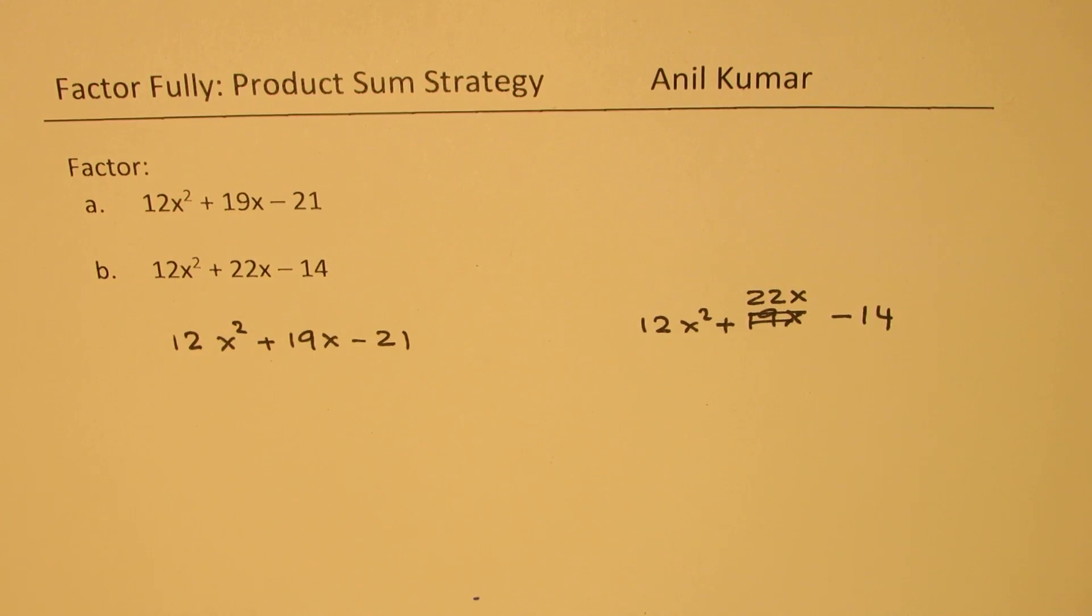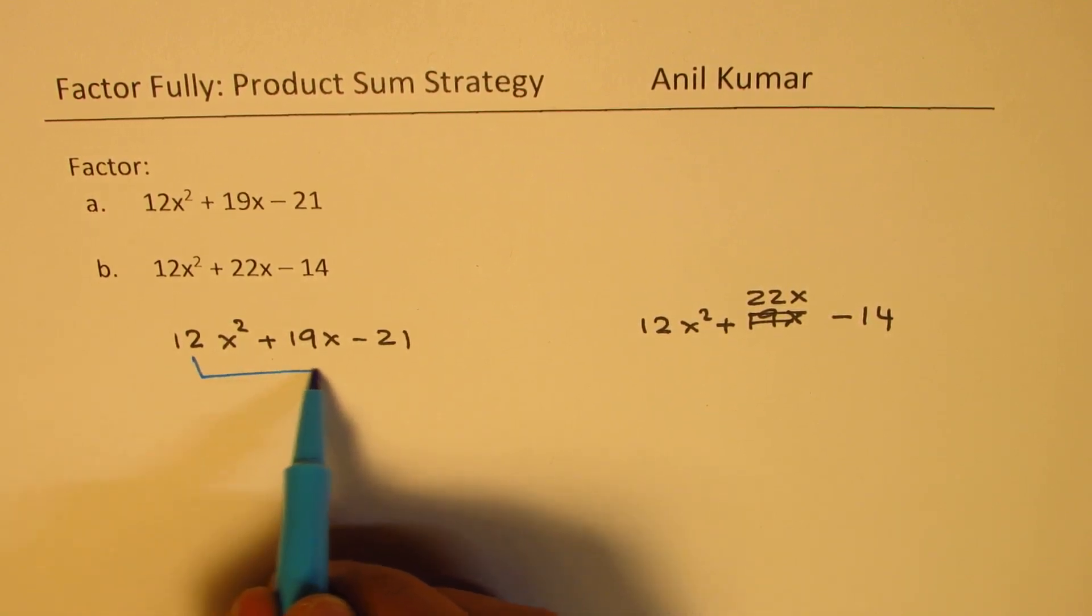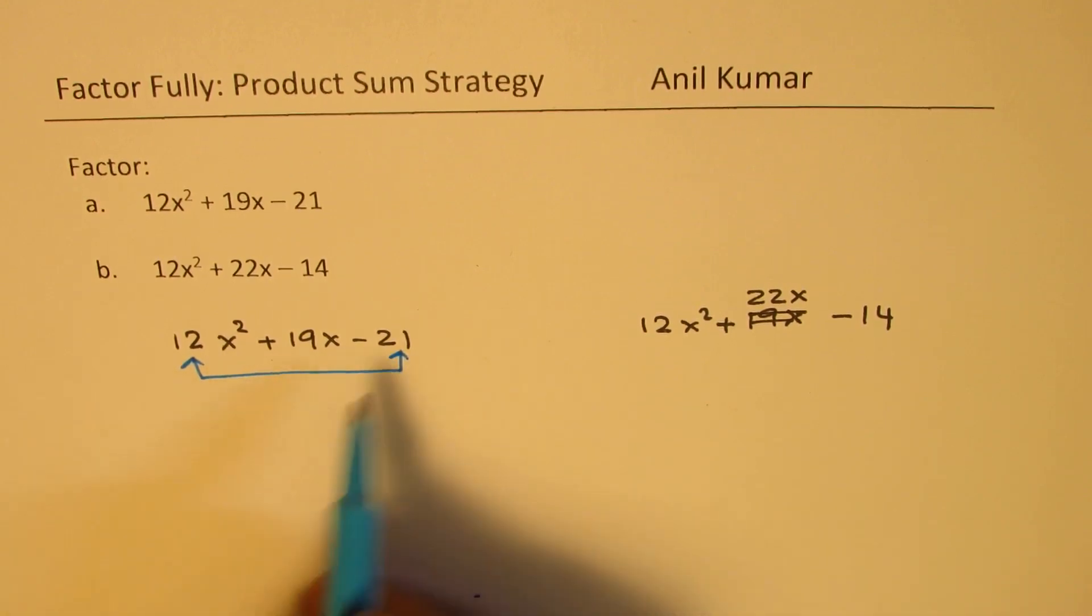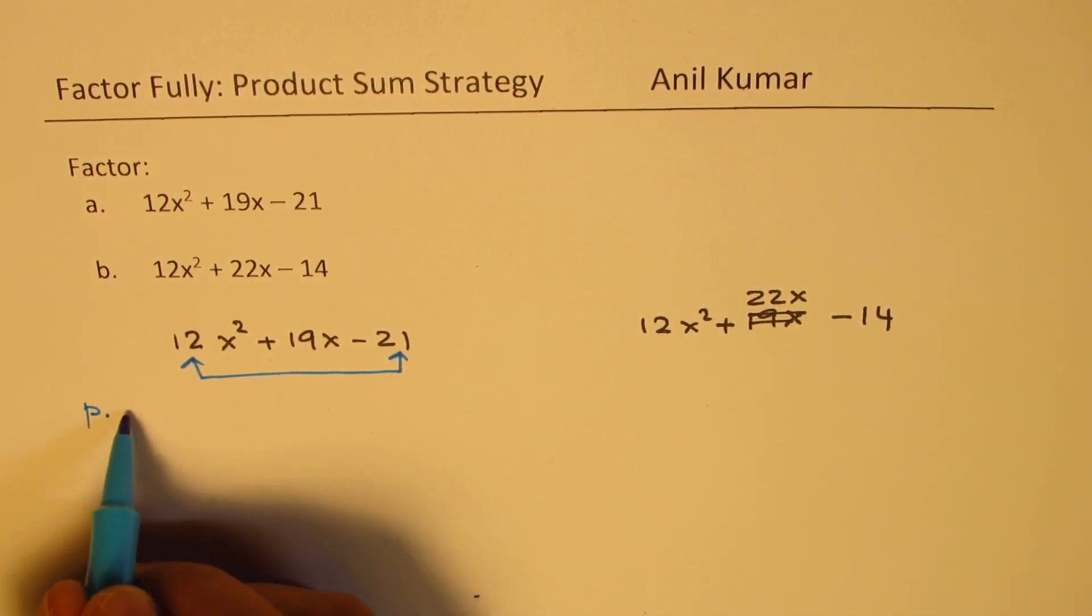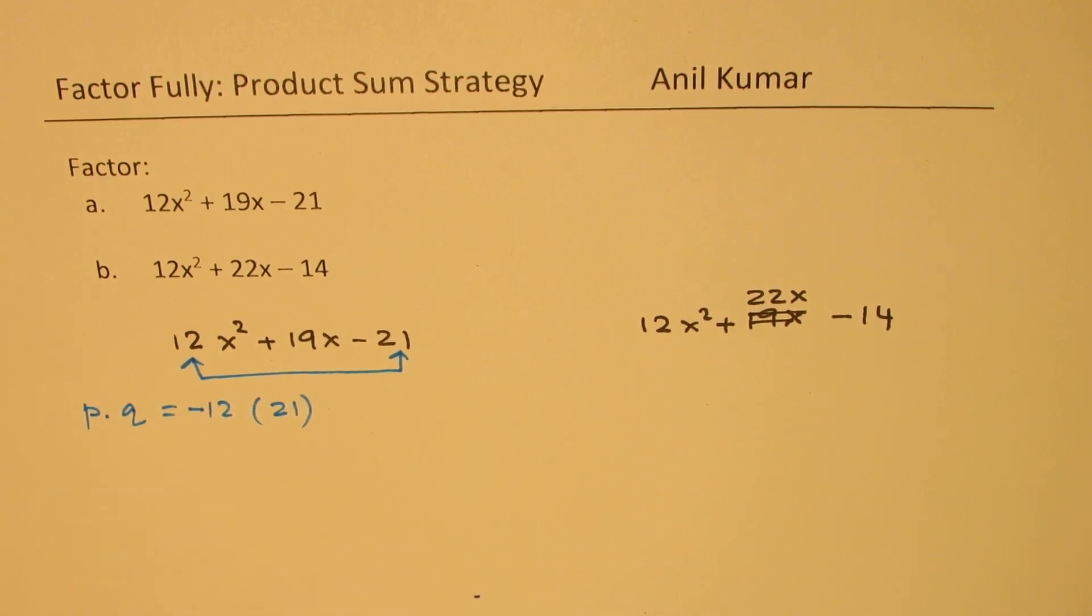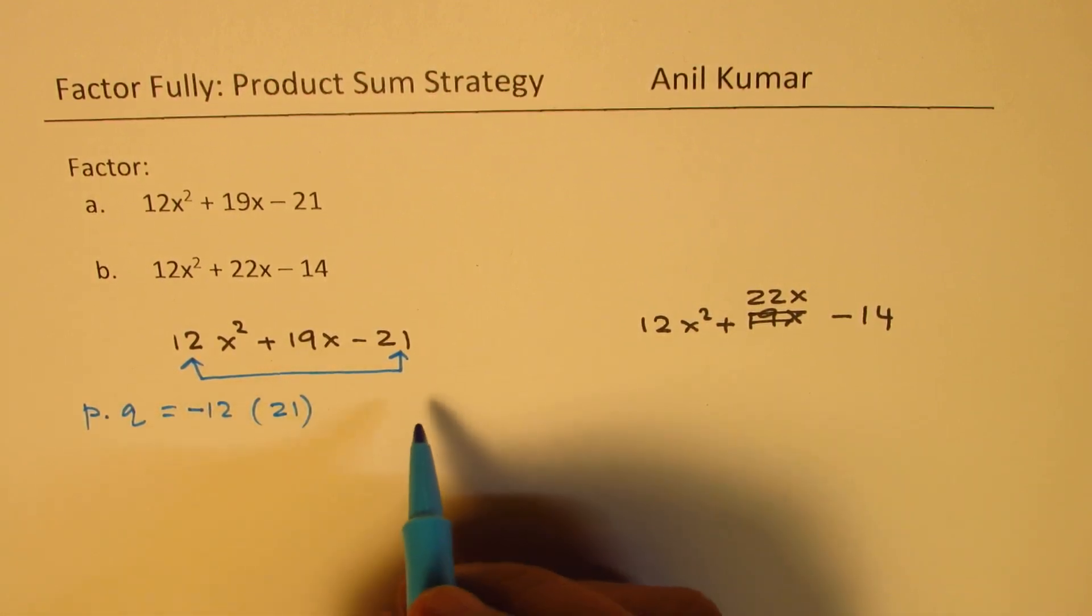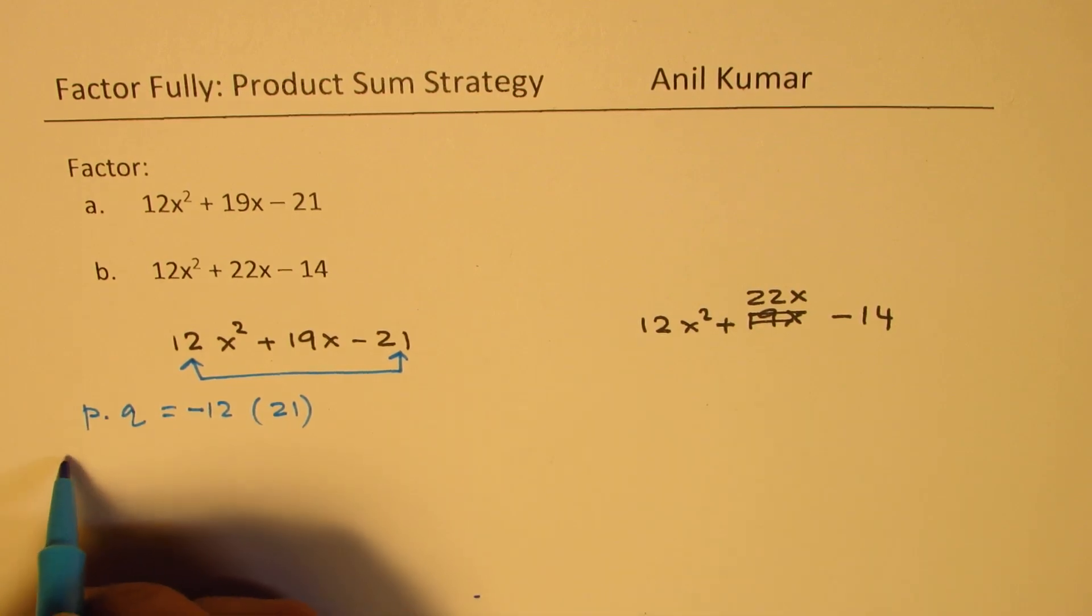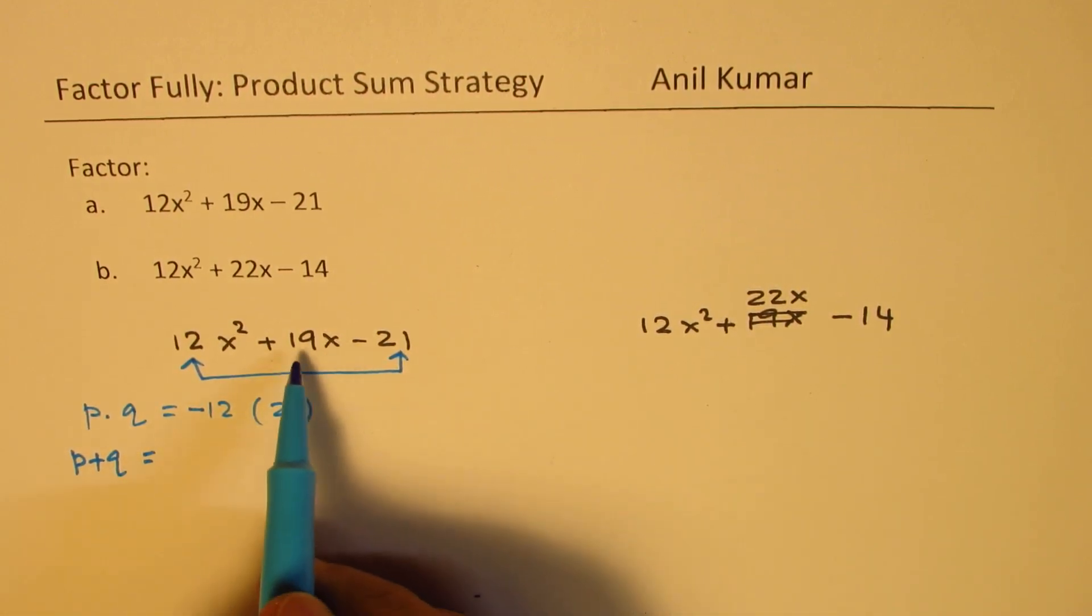So when we are trying to factor them, what we are looking for is a set of two numbers whose product is the product of these two. So what we are looking for is product P and Q, which should be 12 times 21. Since this is negative.